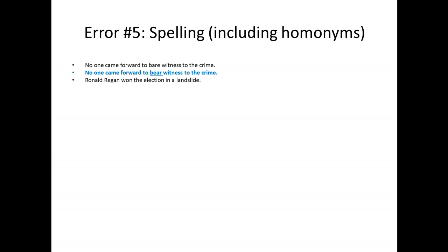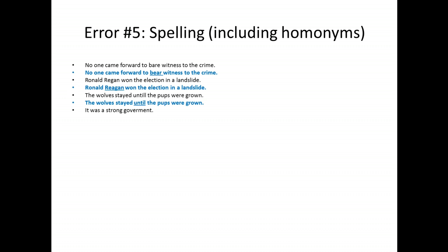'Ronald Reagan won the election in a landslide' — except President Reagan spelled his name R-E-A-G-A-N. Misspelling a name is very common. 'The wolves stayed until the pups were grown' — the word 'until' is frequently misspelled; it's a single L. 'It was a strong government' — 'government' is another word that is so often misspelled. And 'weird' — that's a word that breaks the conventional rule of 'I before E except after C'; it's spelled W-E-I-R-D and is an exception to the rule.